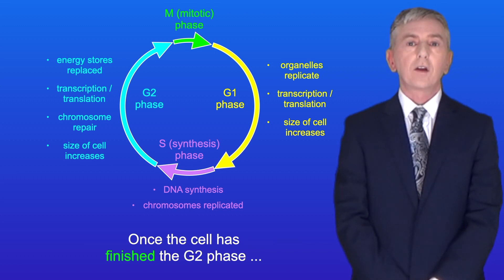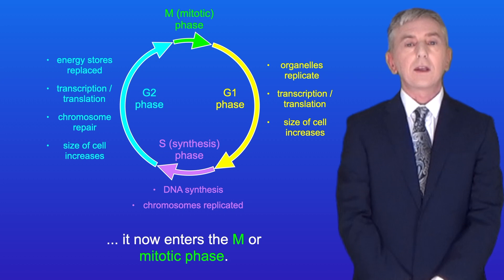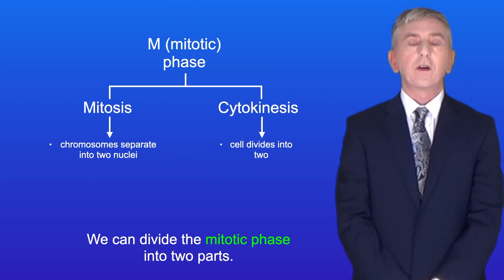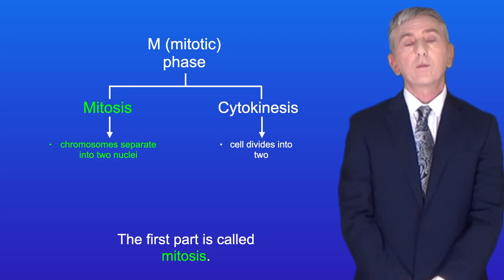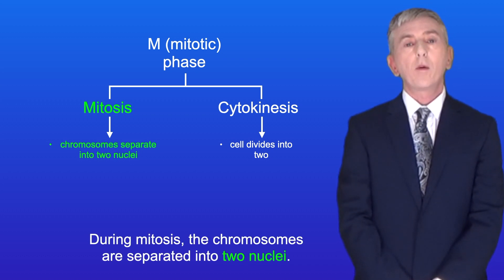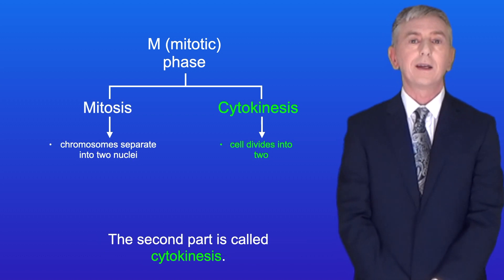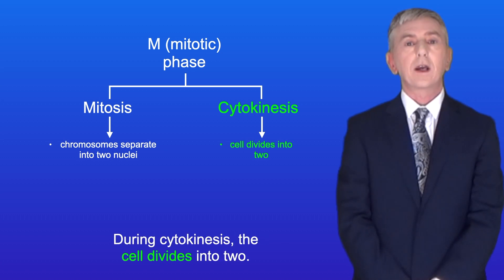Once the cell has finished the G2 phase it now enters the M or mitotic phase. We can divide the mitotic phase into two parts. The first part is called mitosis. During mitosis the chromosomes are separated into two nuclei. The second part is called cytokinesis and during cytokinesis the cell divides into two.